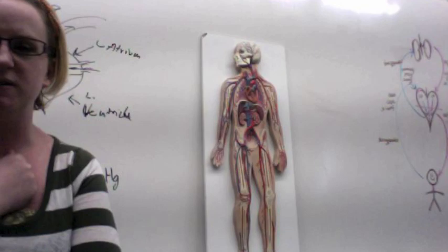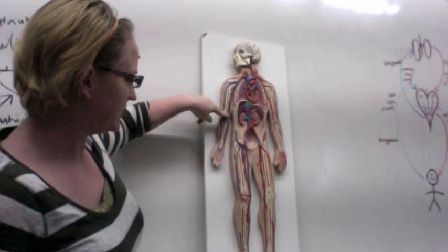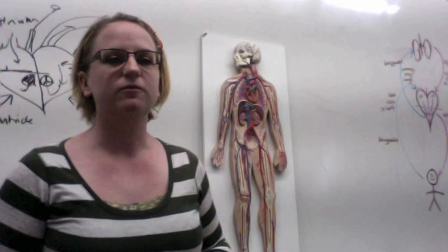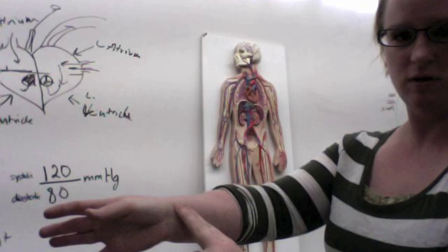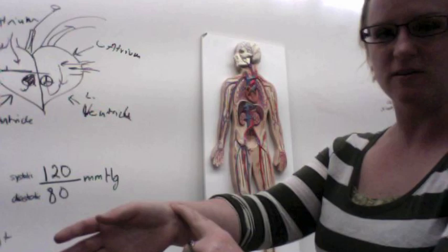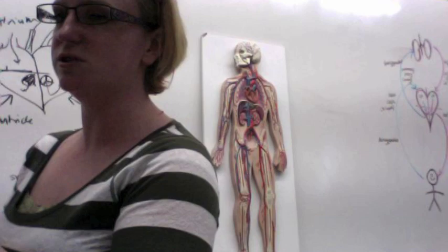Next is the radial pulse. The brachial artery splits, and along the radius bone we have the radial artery. When you're feeling for the radial pulse, you're feeling along the radius near the wrist — right about there. When people feel the pulse in their wrist, they're typically feeling for the radial pulse.